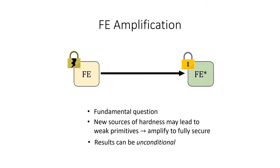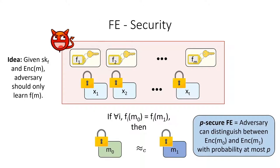This brings us to FE amplification. Amplification is where you take a weakly secure primitive and use it as a building block to construct a fully secure primitive of the same type. What does it mean for an FE scheme to be weakly secure? We define a P-secure FE scheme to be one in which the distinguishing advantage of the adversary is at most P. The standard notion of FE security would require P to be some negligible function of the security parameter, and a completely insecure scheme would have P equal to 1. In general, P can be any value between 0 and 1, and our notion of security weakens as P increases.